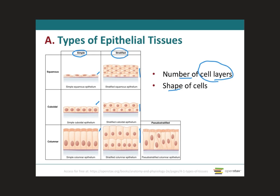If they have more than one cell layer, we call it stratified. Now with regards to the pseudo-stratified, pseudo means false. So that means that it looks like it's stratified, but it's really not — it's a false stratified, meaning that these cells sometimes get squished in the middle because they're so tightly packed together that it looks like they have more than one cell layer, but they really only have one cell layer.